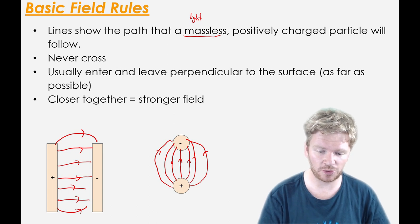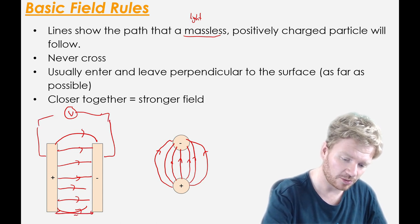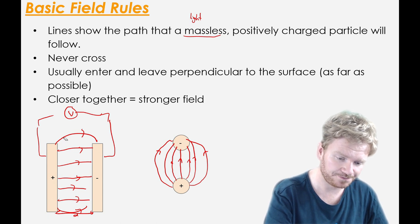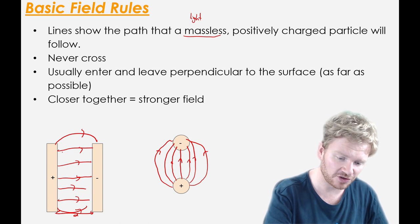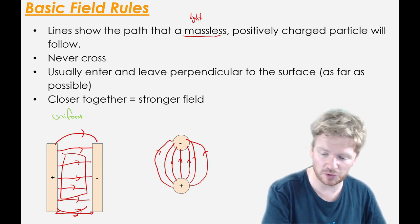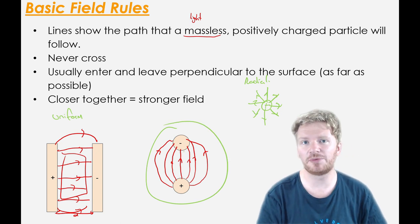One thing to remember is that field strength depends on the voltage between parallel plates and also on the distance between them, and that's going to be the same for radial fields. If I have a field between two parallel plates, it's evenly spaced and all the field lines are the same distance apart — this is called a uniform field, meaning the field is the same at all points. But if I have a single positive particle by itself, I would draw the field lines going away from it — that's a radial field.